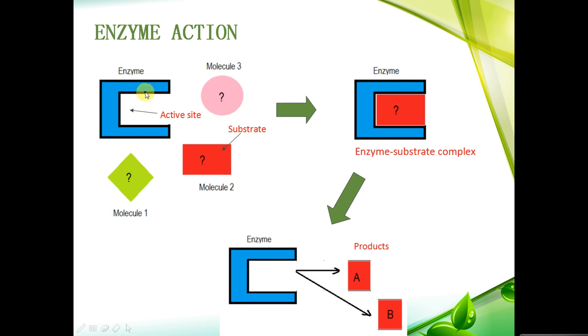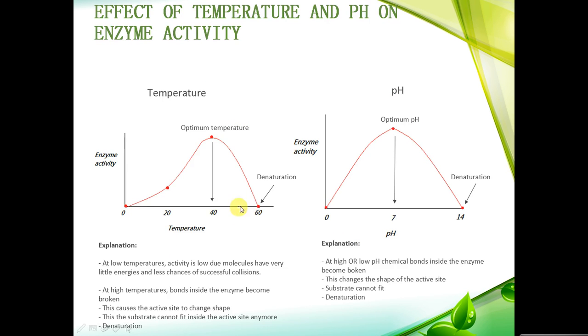That is why, at very high degrees, enzyme activity falls to zero, and we call that denaturation, which is pretty much just the change in shape of an active site due to breakage of chemical bonds inside the enzyme.